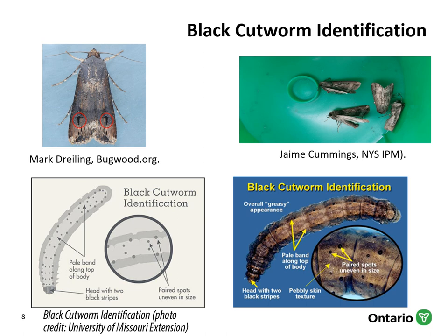Black cutworm moths are fairly large, with a wingspan of 3 to 5 centimeters. When the wings are closed, two-thirds appear so dark they look black. A key feature to look for are the dagger-shaped markings on the back third of the wings. The black cutworm name reflects a key feature of the larvae: their dark coloration. Their body is relatively smooth with a greasy sheen, and they have a pale band along the body. Black cutworm can be distinguished from other species by the unequally-sized paired dark spots, or tubercles, on the upper edges of each body segment — the front tubercle is noticeably smaller than the rear one. The head has two black stripes.